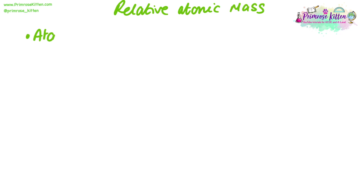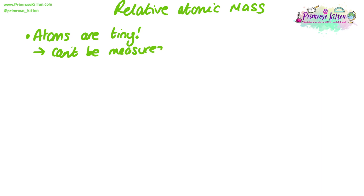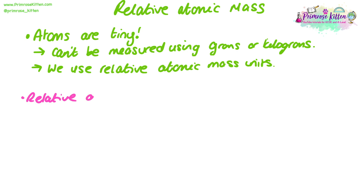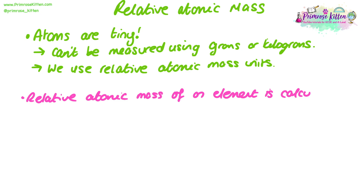The next thing we're going to look at is how to calculate relative atomic mass and what it actually means. Atoms are tiny — so small, in fact, that we need a whole new way to measure them. We can't use normal standard units like grams and kilograms because the numbers would be so small we'd have to use standard form, making them too difficult to work with in calculations. So instead we use our own unit, which is called relative atomic mass units.